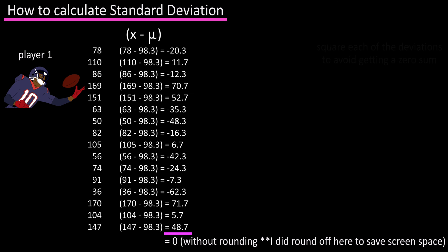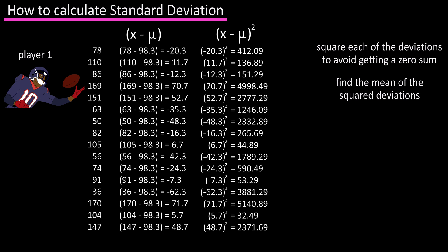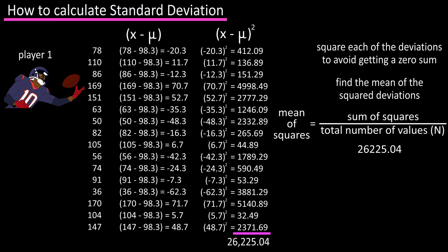To eliminate this problem we can start by squaring each of the deviations as you see listed here. Next we can find the mean or average of these squares by summing them up and dividing by n, the total number of values in the data set. The sum of the squares is 26,225.04 divided by n 16, and we get 1639.1. This value is called the variance.